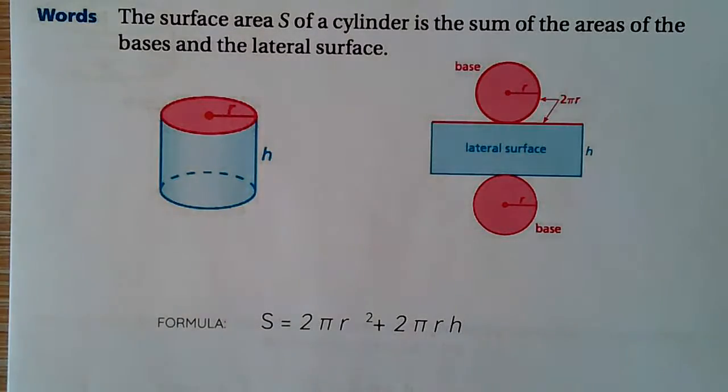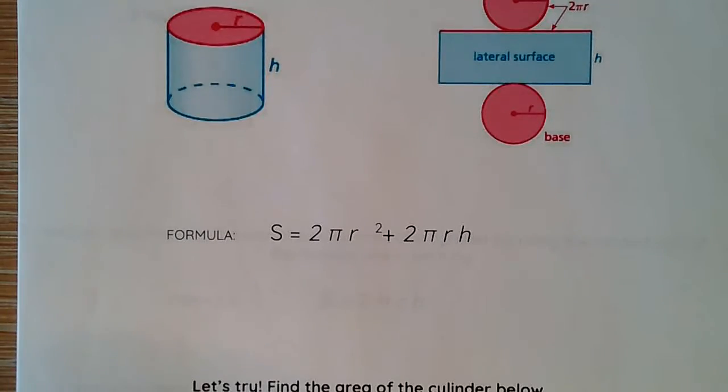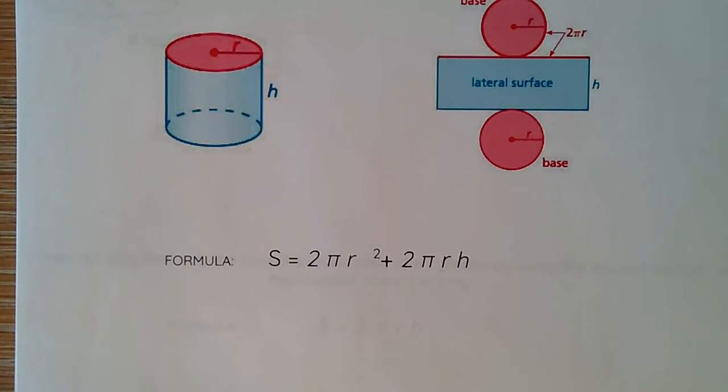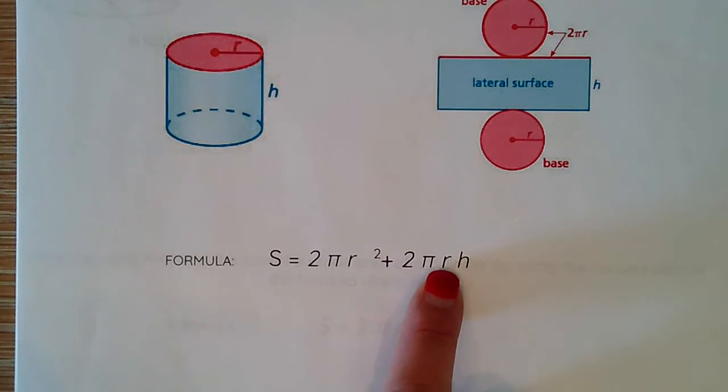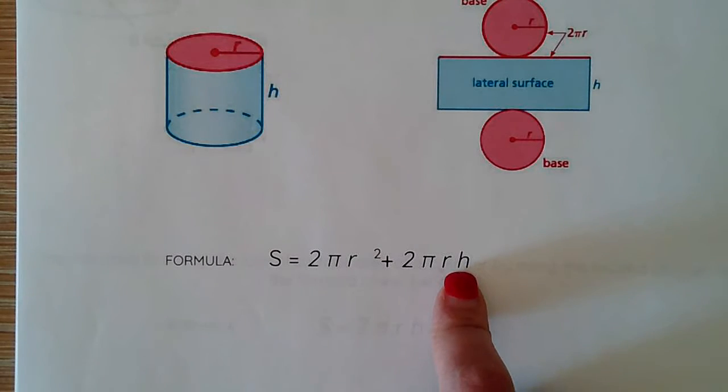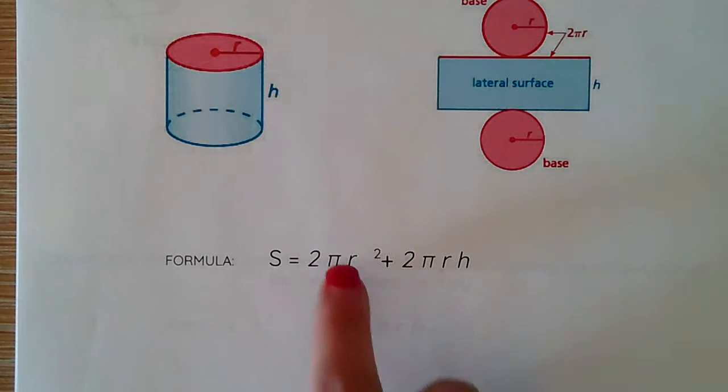So to find the surface area of a cylinder, we have a formula down here. Our formula is surface area equals 2πr² plus 2πrh. We know that to find the area of a circle we use πr².